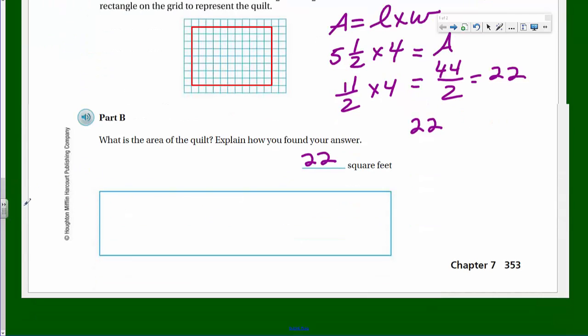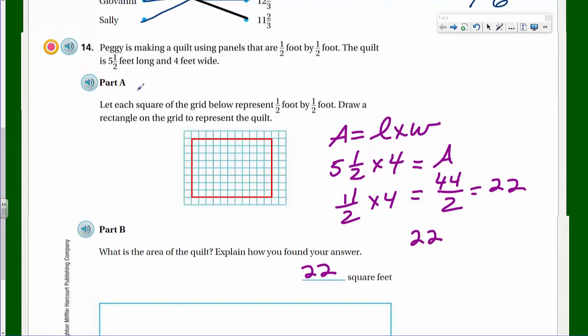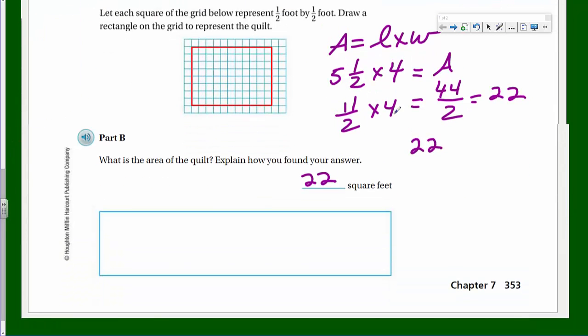This box also says explain how you found your answer. So we have to explain. I'm going to go ahead and explain, and then like I do with my normal magic, I'll type that up in just a matter of seconds. The way we did it, we just took the 5 and 1/2 times the 4 and got our answer this way. I thought this is the quickest way, but they did have us do this model here.